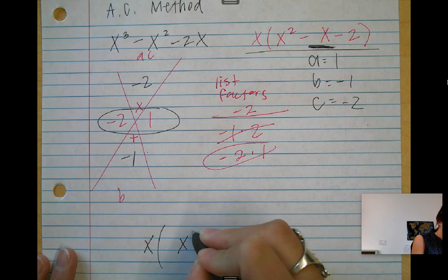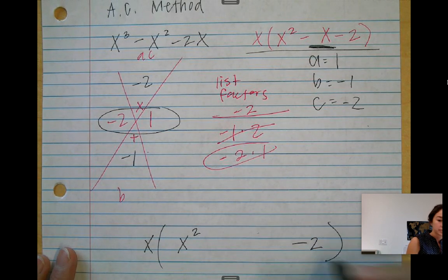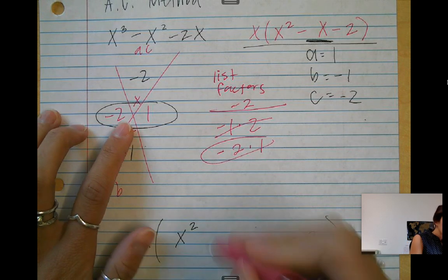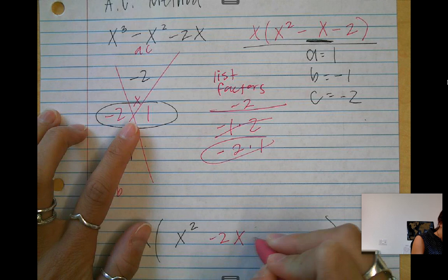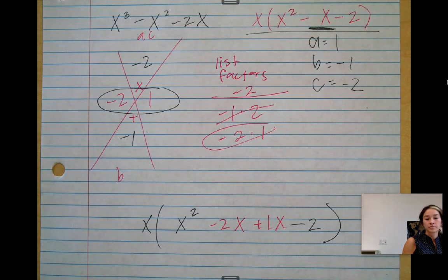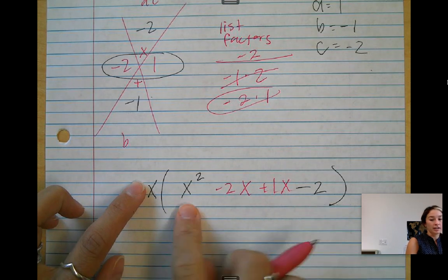Then I'm going to rewrite everything else I have. So I have x squared. I'm changing my B term to negative 2x plus 1x. So I'm not losing this x that I factored out, but now I'm going to factor this by grouping.